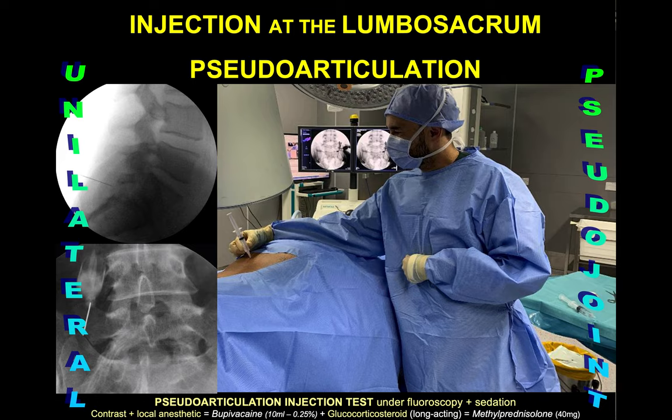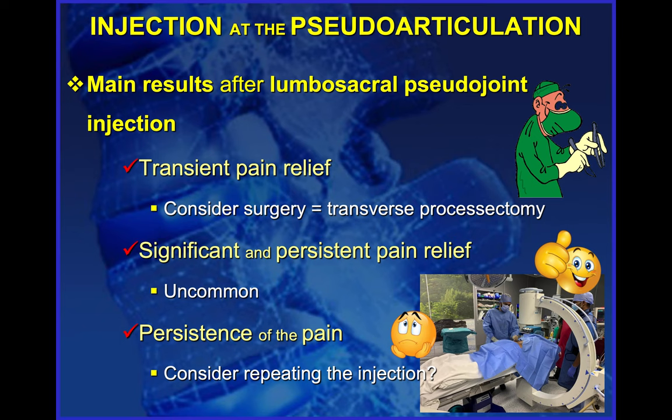I prefer to perform this injection myself under sedation. I use contrast to identify the pseudo-joint and then inject a combination of bupivacaine plus methylprednisolone inside the pseudo-joint. The patient expects to have temporary relief of the pain for about two to four weeks. If that's the case, the patient can be submitted to transverse processectomy.